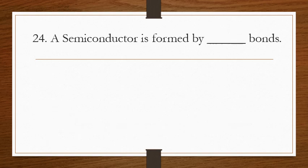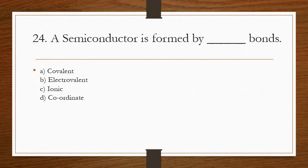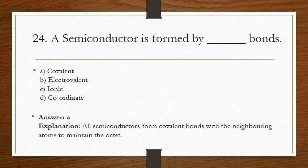Question 24: a semiconductor is formed by what type of bonds? The correct answer is A. All semiconductors form covalent bonds with neighboring atoms to maintain the octet.